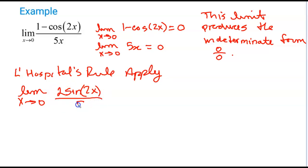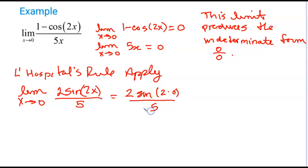And the derivative of the bottom is 5. If I substitute, I get 2 sine(2 times 0) over 5. This is the sine of 0, which is 0. This ends up being 0 over 5, which is therefore 0.